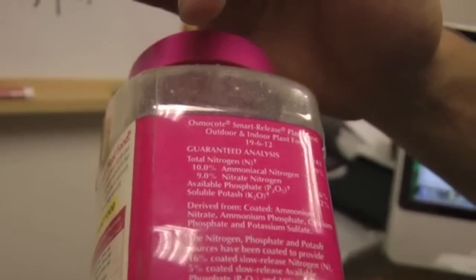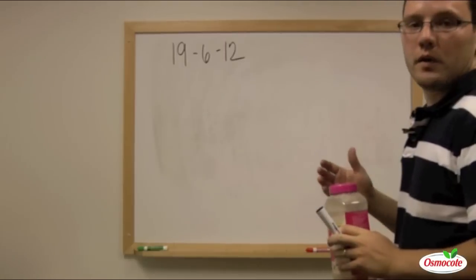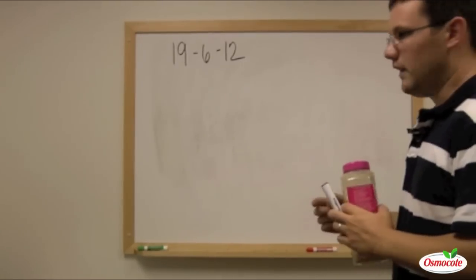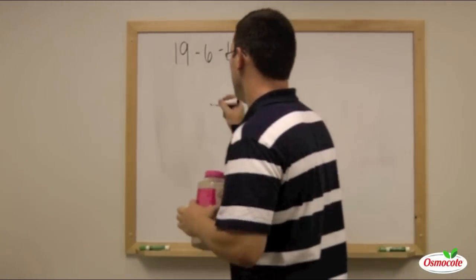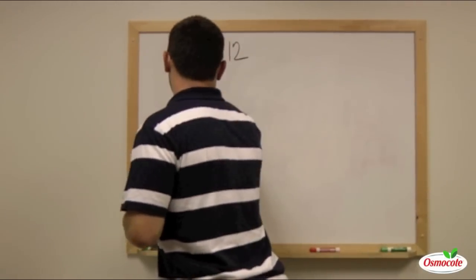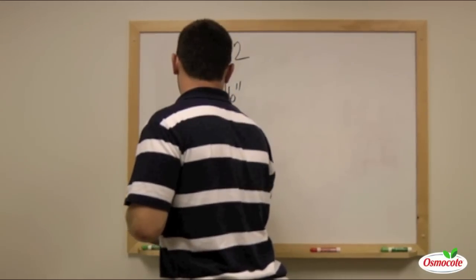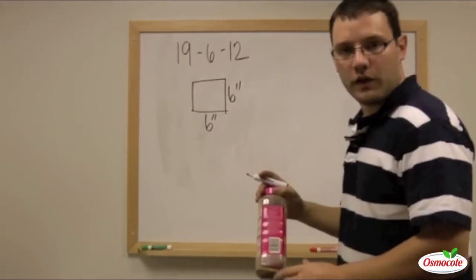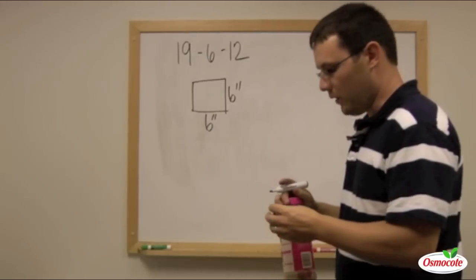I'm going to write that up here. So if we were wanting to fertilize a small pot, let's say a 6-inch square pot, how much Osmocote do we need to put in that square pot?